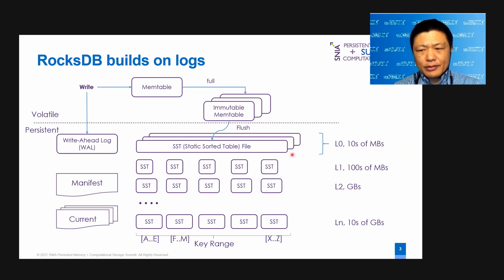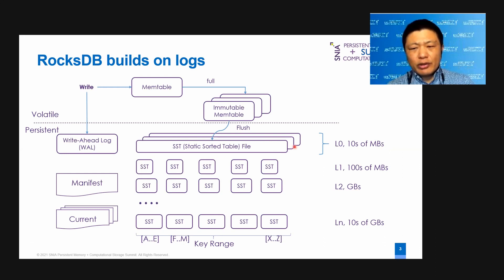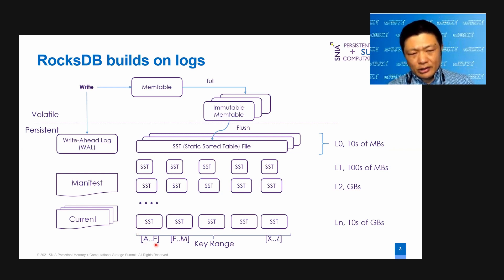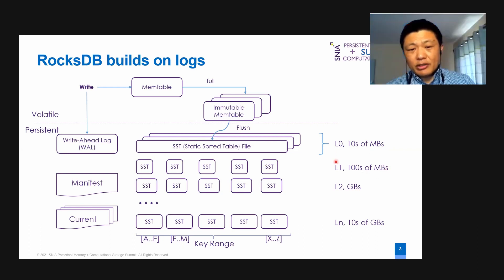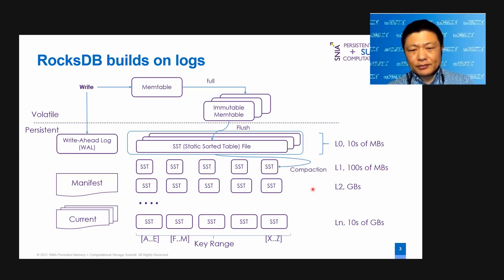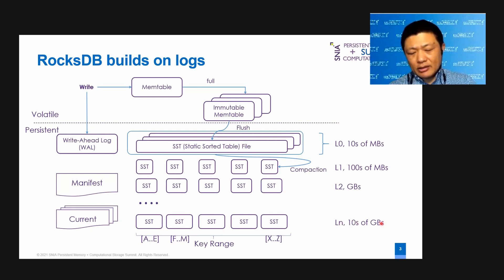The L0 files cover the whole key range. When there are enough L0 files, RocksDB will merge-sort those files into multiple SST files — L1 SST files — each file covering a particular key range. For example, this one is A to E, and F to M, and X to Z. Those L1 files are typically hundreds of megabytes in size. The merge-sort process is called compaction. Compaction will happen for the rest of the levels, and some files can even be several gigabytes in size.